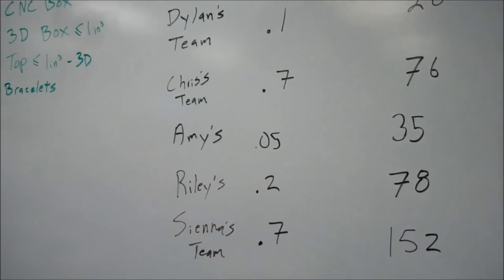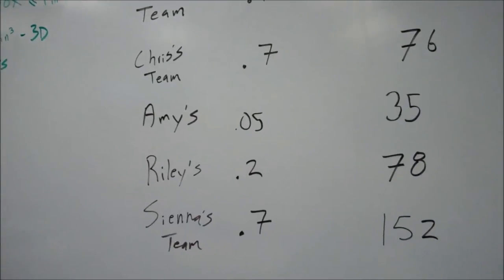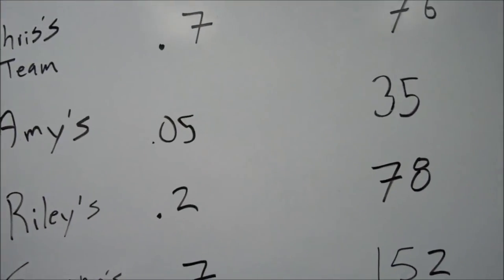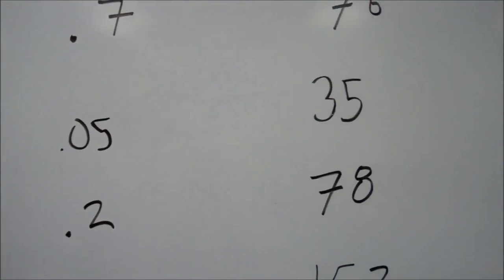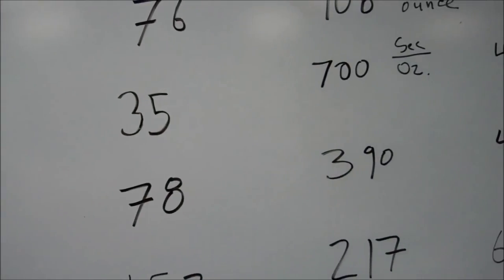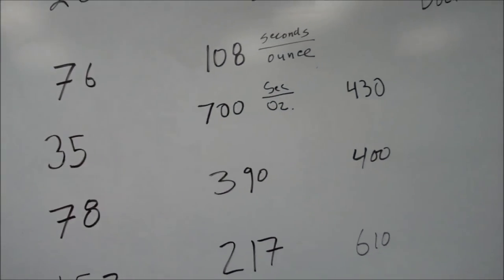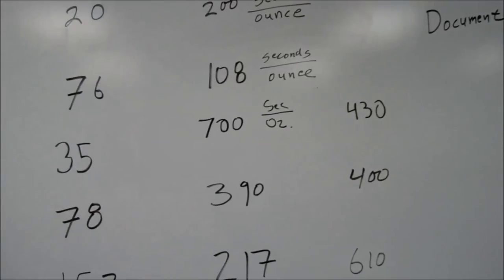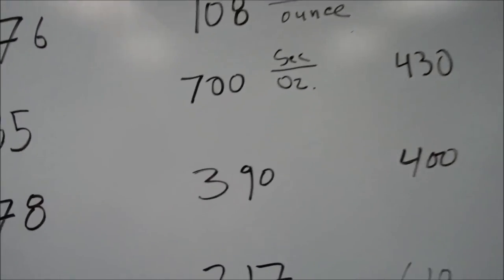Okay, here are all five teams up on the board. Over at Amy's, weighing in is a featherweight at 0.05, spinning pretty long, which actually works out to be 700 seconds per ounce. Maybe there's a correlation on weight.